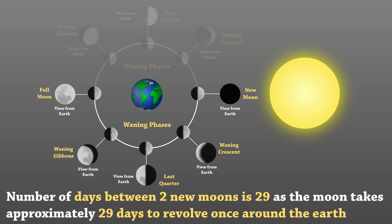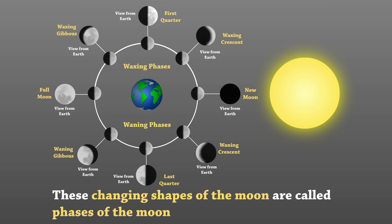Number of days between two new moons is 29, as the moon takes approximately 29 days to revolve once around the Earth. These changing shapes of the moon are called phases of the moon.